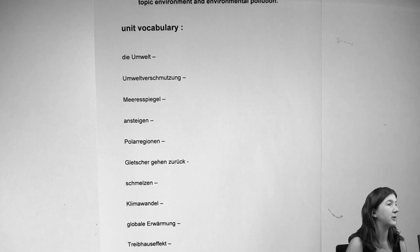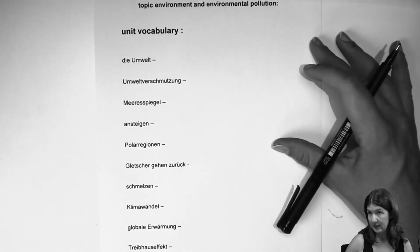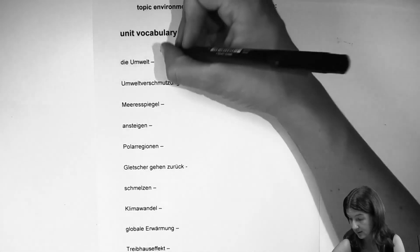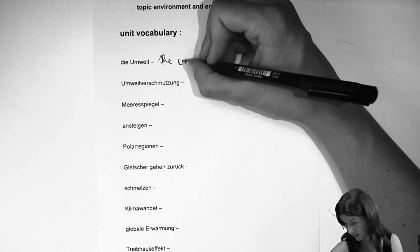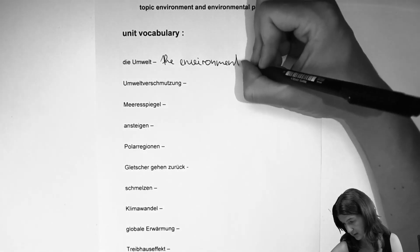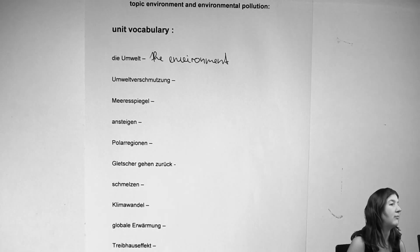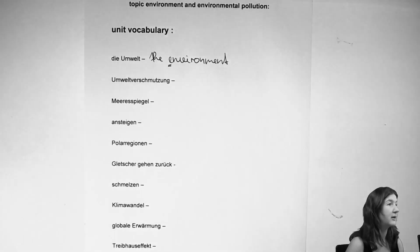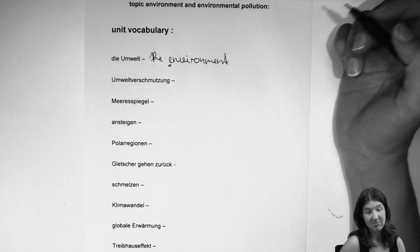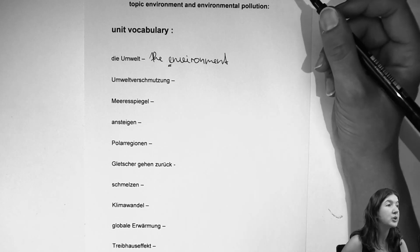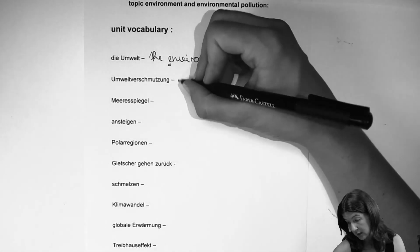First of all we have 'Umwelt' — easy one. As the topic already gives you the solution: the environment. You'll notice in my pronunciation it's 'the' and not 'that' because the word 'environment' starts with a vowel, so we say 'the environment.' Tendentially both versions can be correct.